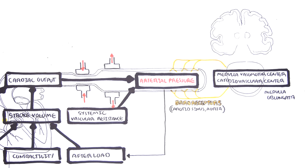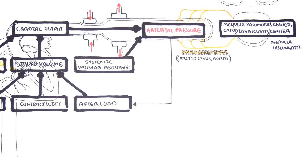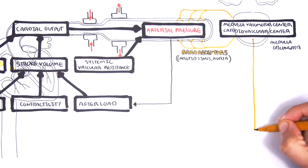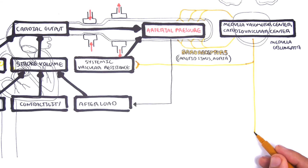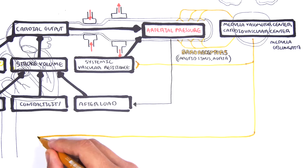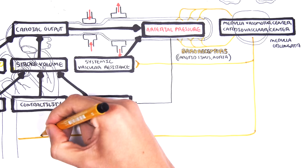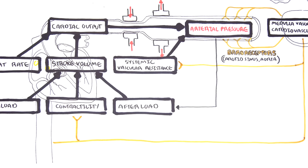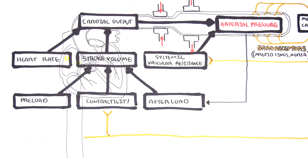Depending on what the input is, the response will target different areas of the body. For example, the response will influence systemic vascular resistance, either telling the body to cause vasoconstriction or vasodilation. The response from the medulla oblongata will also target the contractility of the heart — telling the heart to increase or decrease contractility.